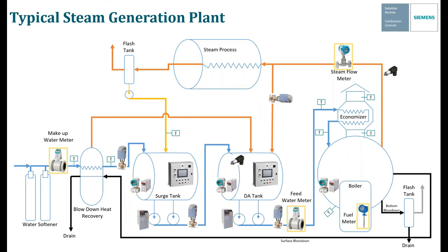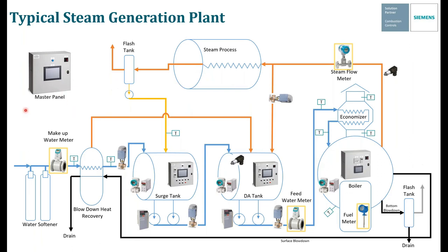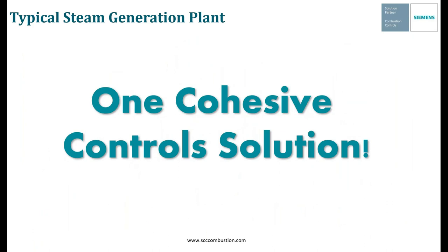Now we add in the panels: a surge tank panel, a DA tank panel, a local boiler touchscreen kit connected to the LMV3 or LMV5 on the burner, and tying everything together, a master panel. In this example we show one boiler, but theoretically you'd have multiple boilers — boiler two, boiler three, and so on — each with all these devices, and each panel connecting back to the master panel. That's how everything ties together. The goal with all these end devices and all this information is to provide one cohesive control solution to the end user, getting you on and then off the job quickly so you can move on to the next one. Everything in Total Boiler Solutions is designed for this one goal.